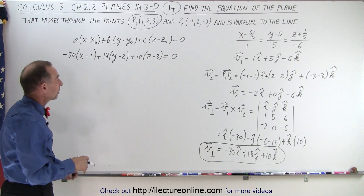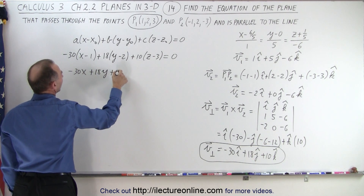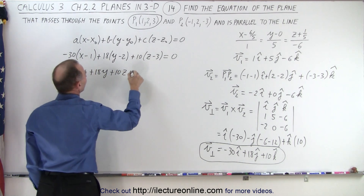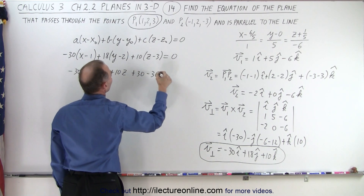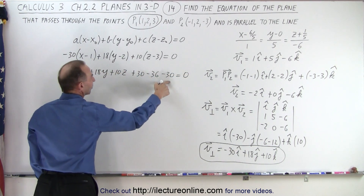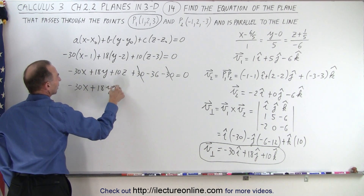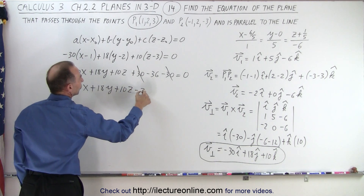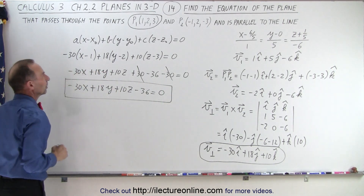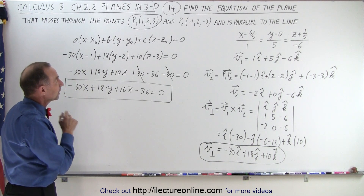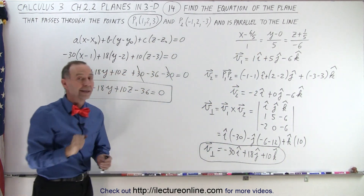Now we put it into general form. That gives us minus 30x plus 18y plus 10z, then plus 30 (from −30 × −1), minus 36 (from 18 × −2), and minus 30 (from 10 × −3), equals 0. The plus 30 and minus 30 cancel out, so we end up with minus 30x plus 18y plus 10z minus 36 equals 0. That is the equation of the plane — the plane that is parallel to the given line and passes through those two points. And that is how it's done.